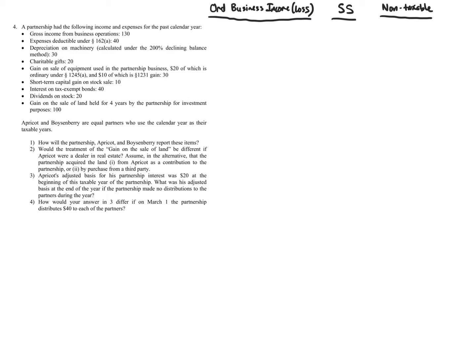The first item is gross income from business operations of $130. The question is: can this make a difference depending on the type of owner? For gross income from business operations, the answer is no. The general rule is that ordinary income gets lumped into the Ordinary Business Income Loss on page one.